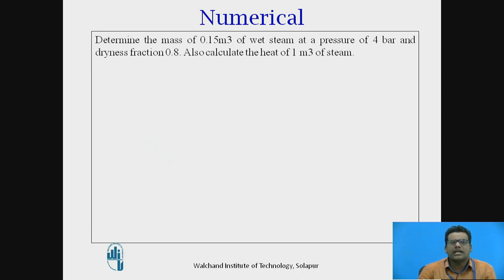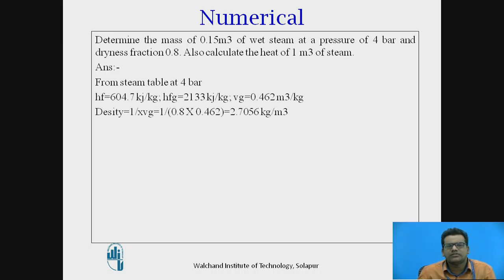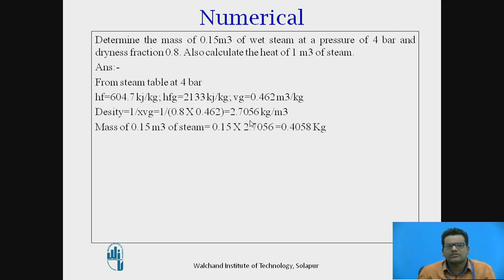Numerical 2: Determine the mass of 0.15 m³ of wet steam at a pressure of 4 bar and dryness fraction 0.8. Also calculate the heat of 1 m³ of steam. At 4 bar, the steam table values of HF and HFG are obtained. Density is calculated as 1 / (X·Vg), where Vg is the specific volume and X = 0.8, giving a density of 2.7056 kg/m³. Multiplying by volume 0.15 m³ gives a total mass of 0.4058 kg.